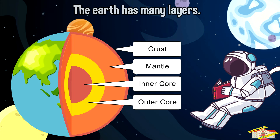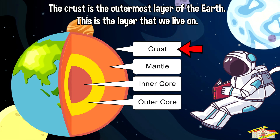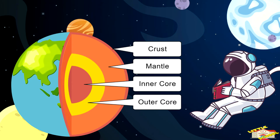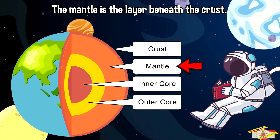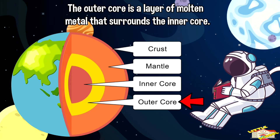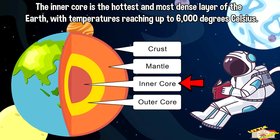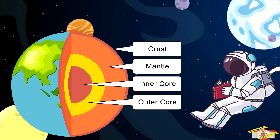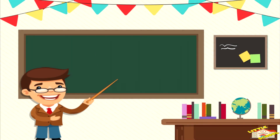The Earth has many layers. The crust is the outermost layer of the Earth — this is the layer that we live on. The mantle is the layer beneath the crust. The outer core is a layer of molten metal that surrounds the inner core. The inner core is the hottest and most dense layer of the Earth, with temperatures reaching up to 6,000 degrees Celsius.